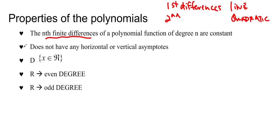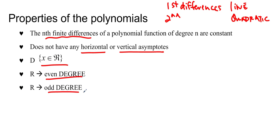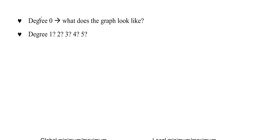Also, something really helpful is that polynomials don't have any horizontal or vertical asymptotes, so it's easier to draw them. The domain is always x in R — we can put any number into a polynomial and get a number. If you have a degree zero polynomial, that's something like y equals 5, which is a horizontal line — it's degree zero.